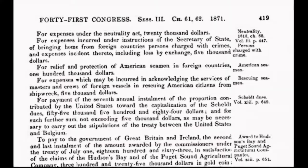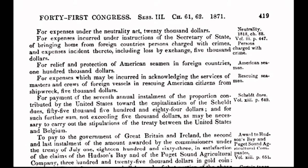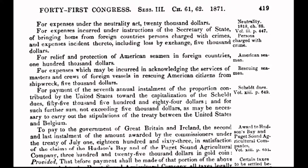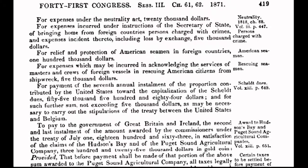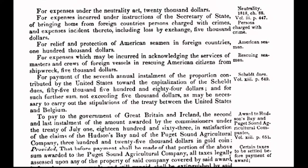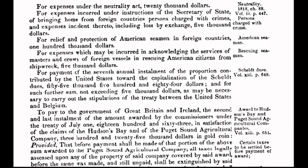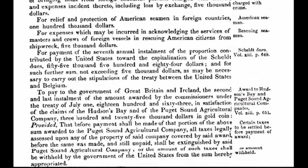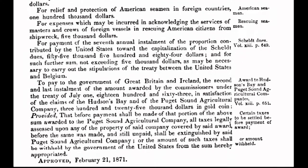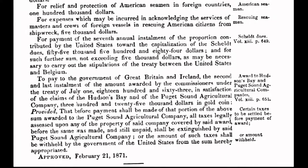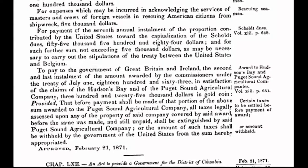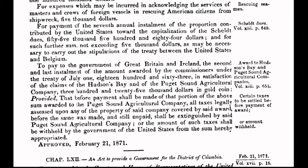In today's program, I will put the spotlight on an act that was enacted in the year of 1871 on February 21st. The Congress passes an act to provide a government for the District of Columbia, also known as the Act of 1871. When you fully understand the ramifications of the past, you will then fully understand the ramifications of the present, and you will know how to change the future. And here is where our story begins.